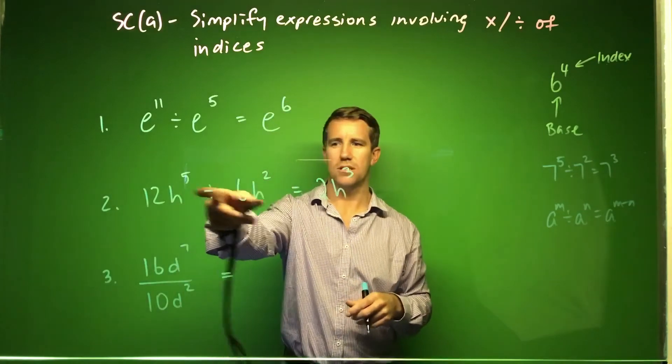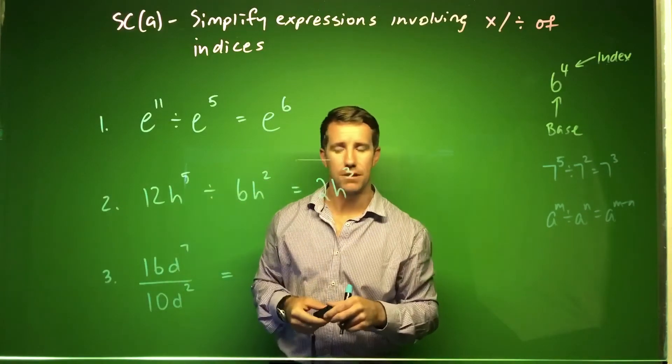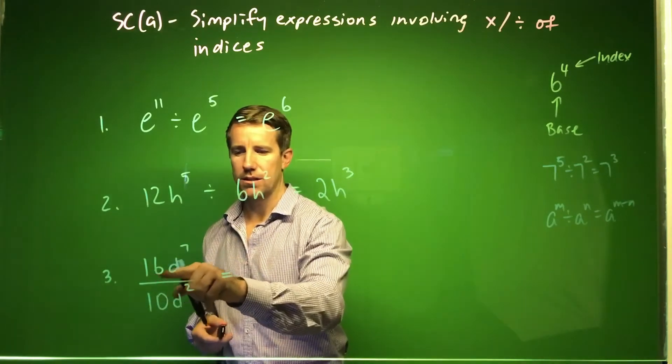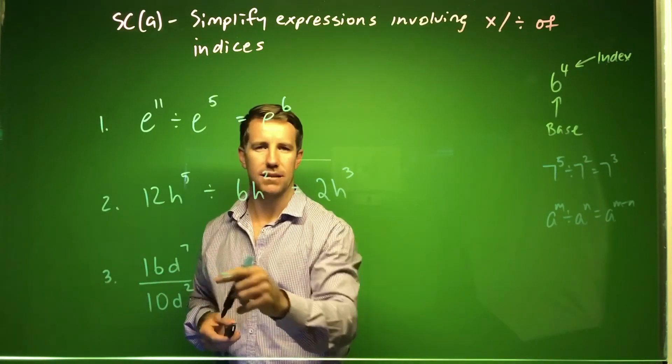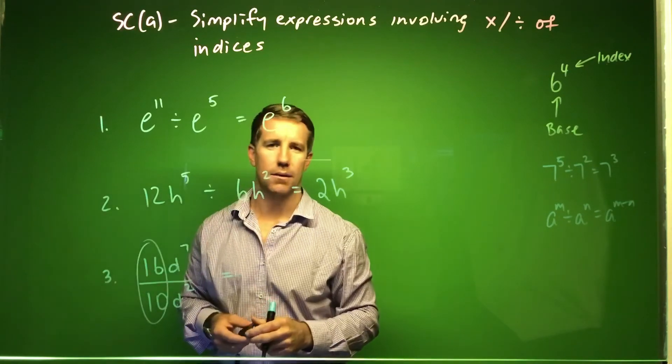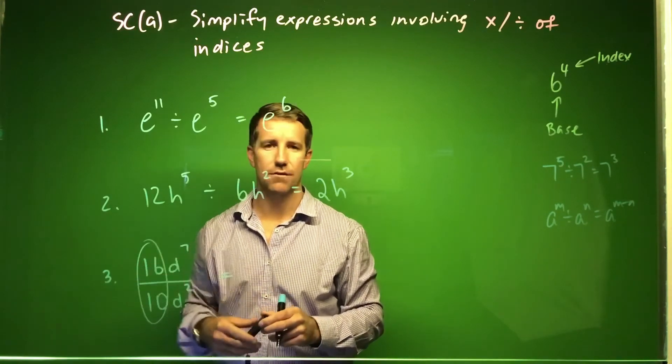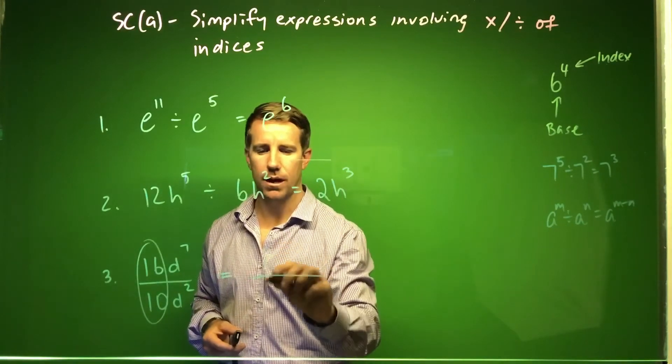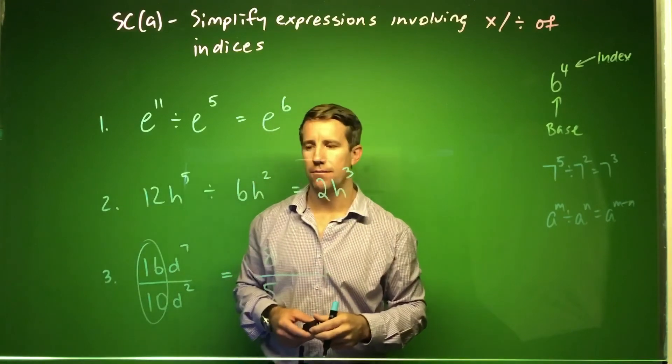Third one down, I've set up this question essentially the same thing, just a little differently. We've got a fractional index here, looking at 16d to the power 7 divided by 10d squared. Again, the first part I'm going to focus on are these coefficients out the front. So 16 over 10, if we were to go and simplify that, we know we would have 8 over 5. That's taken care of.